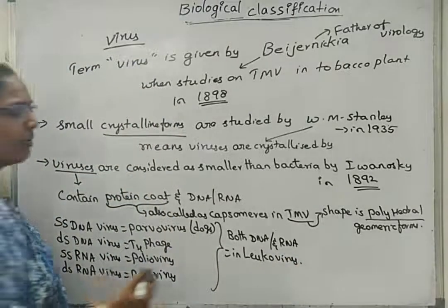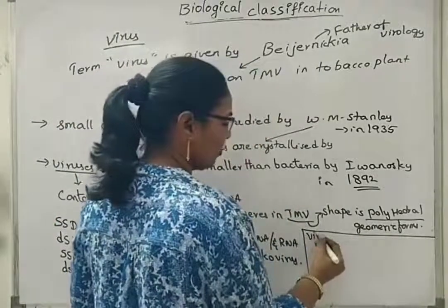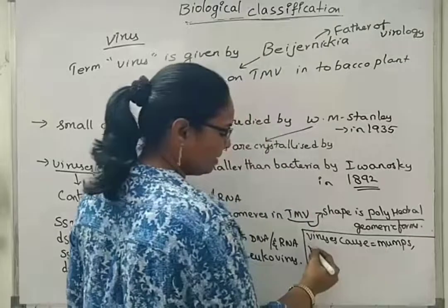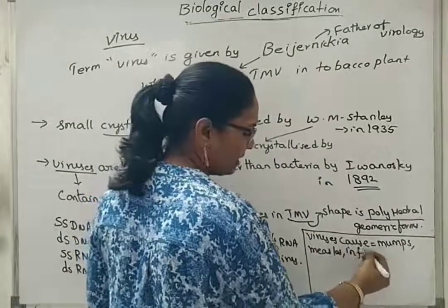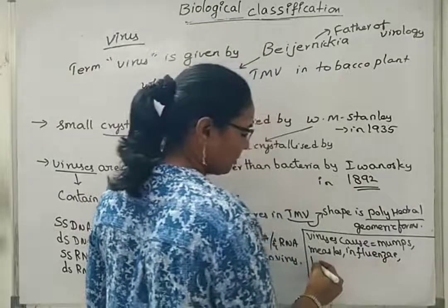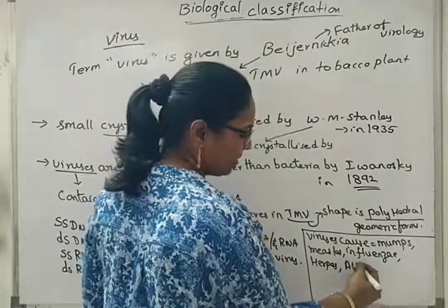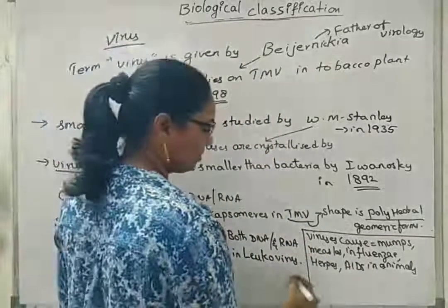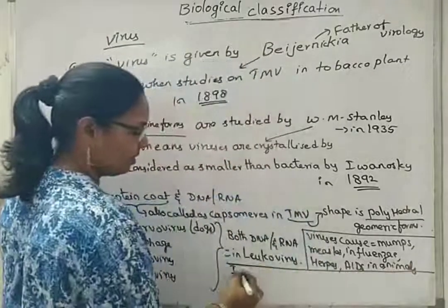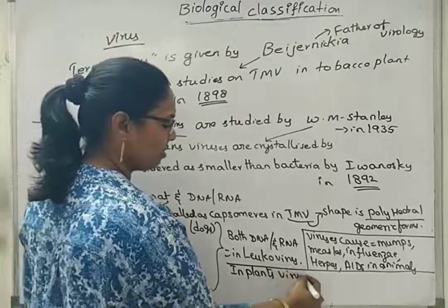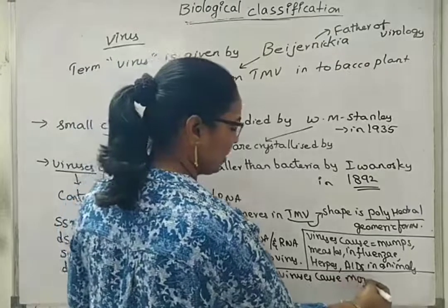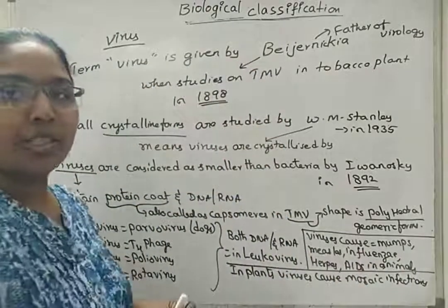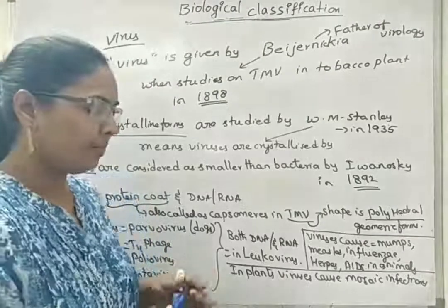Other examples of viruses: viruses cause mumps, measles, influenza, herpes, AIDS in animals. In the case of plants, it causes mosaic infections. For example, chilly mosaic virus causes mosaic infection in chillies.